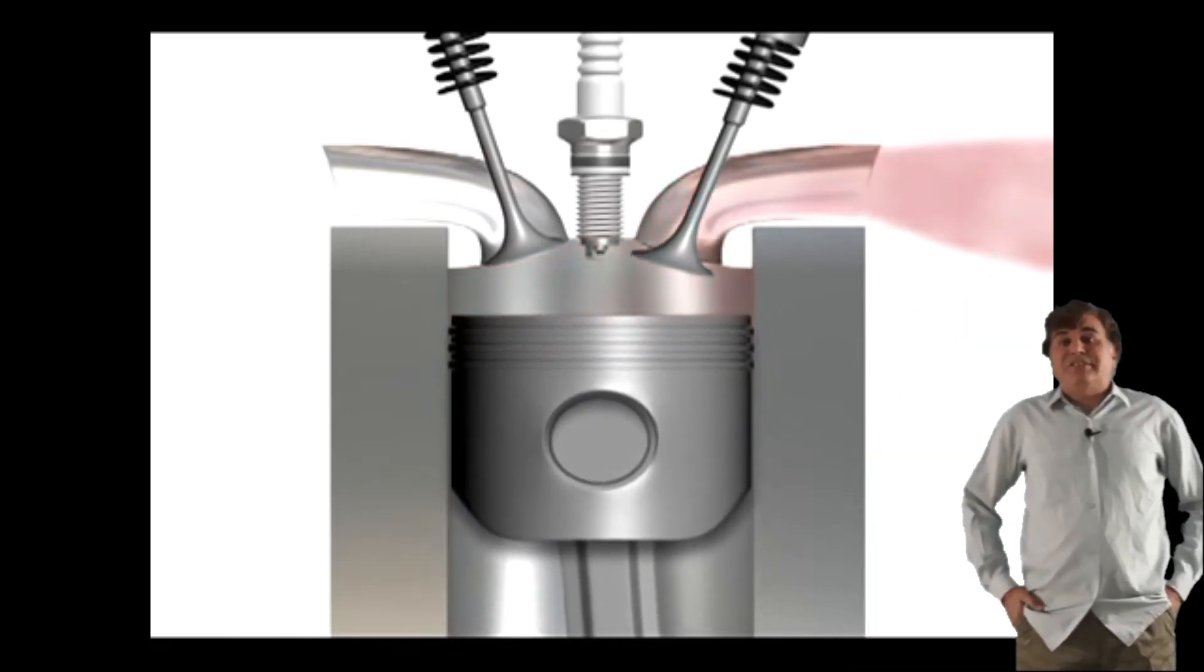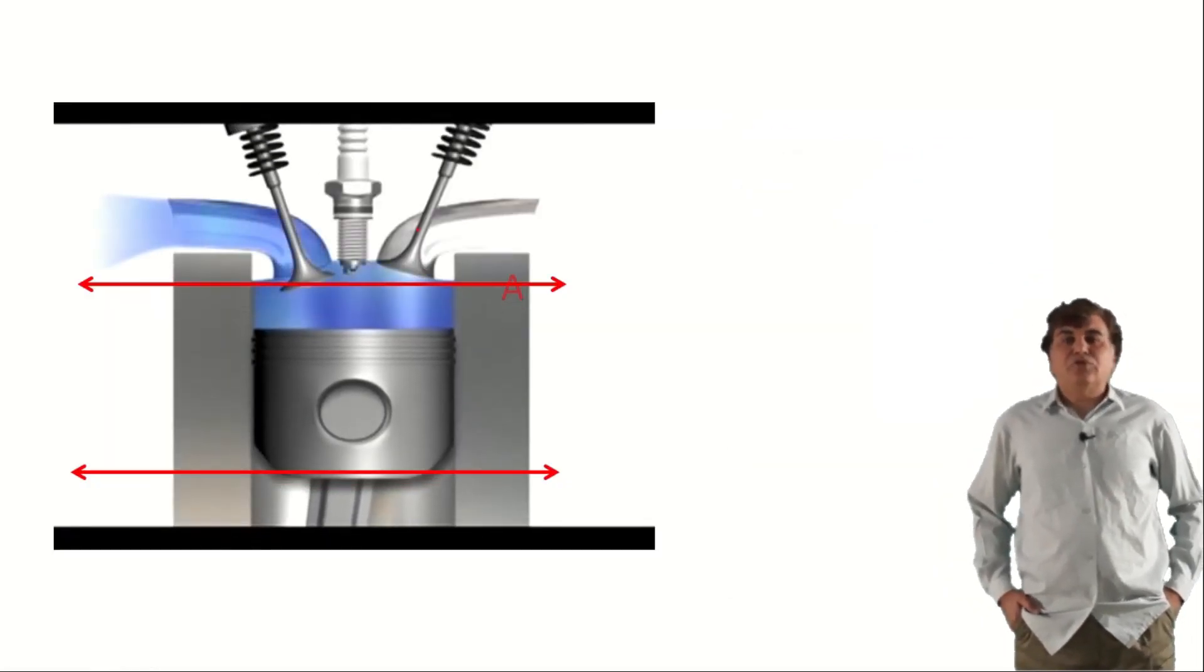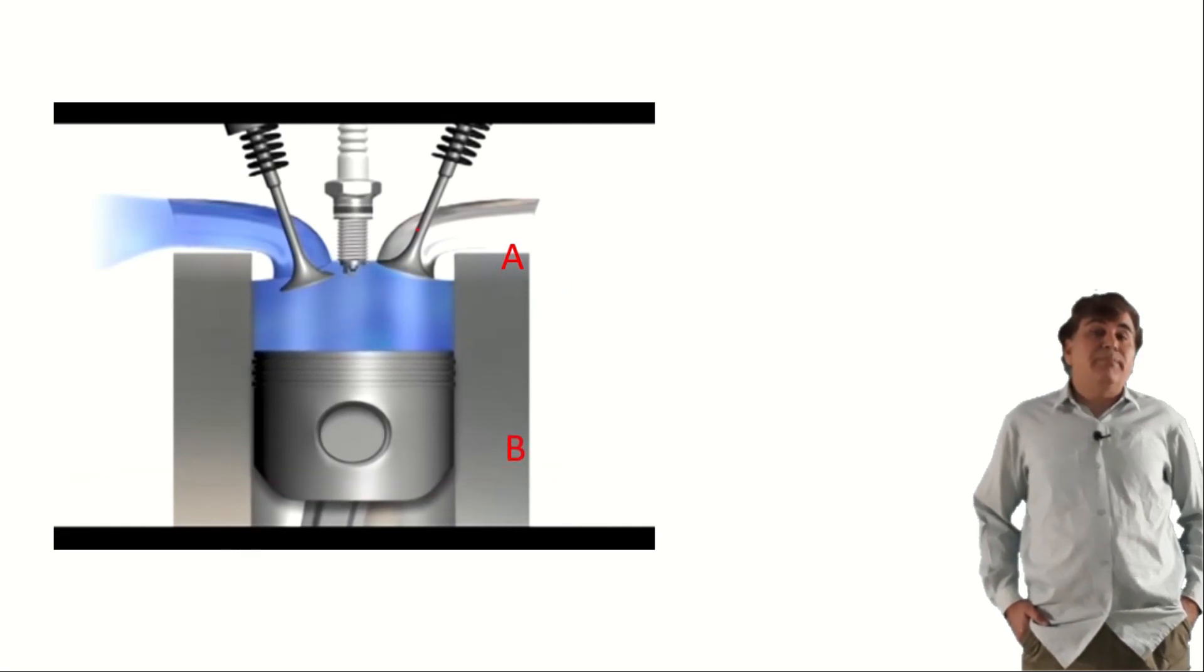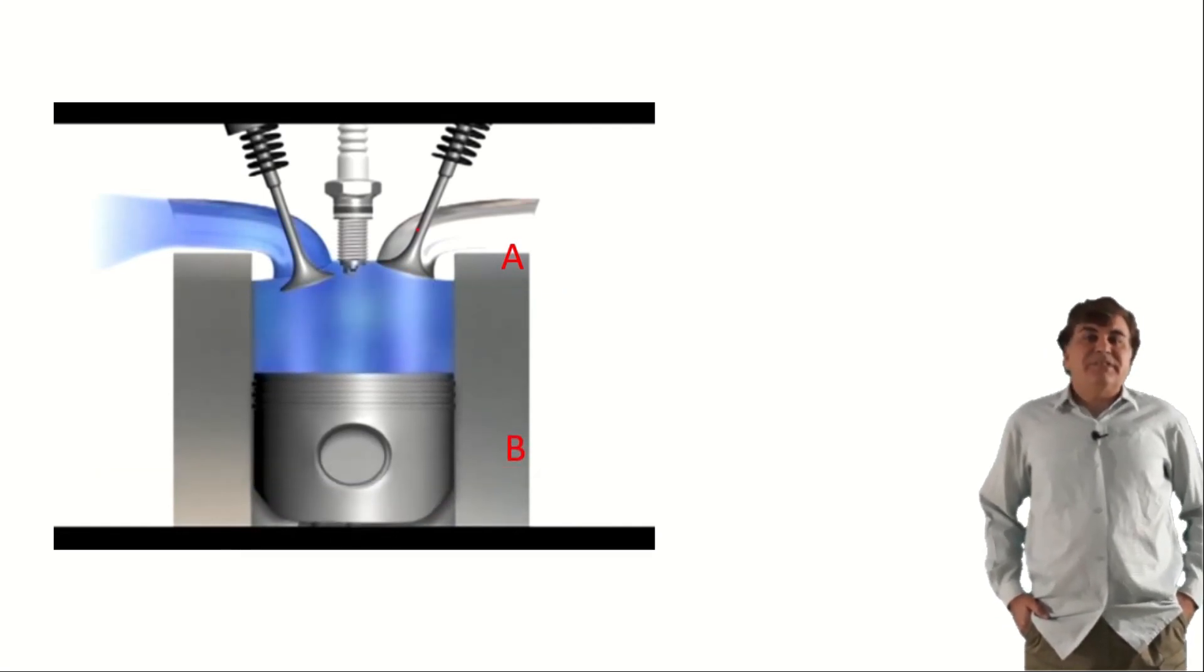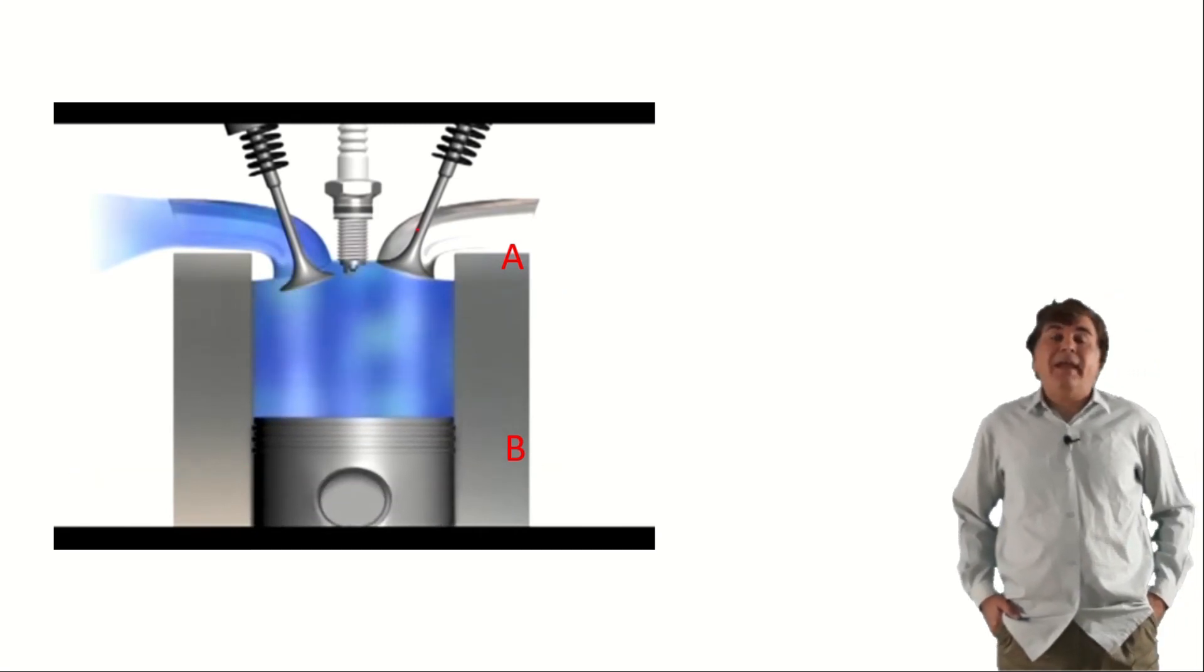Now, if you ever have a chance to inspect the combustion chamber of an old car or motorcycle in a mechanic shop, you will notice that the combustion chamber wall wears at the turning points A and B where the piston actually stops.